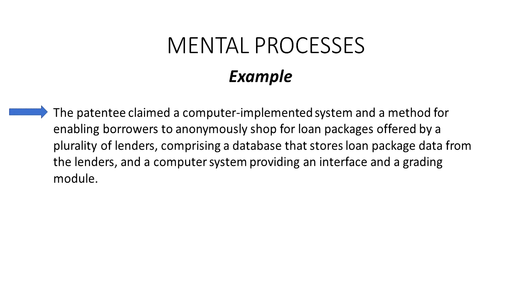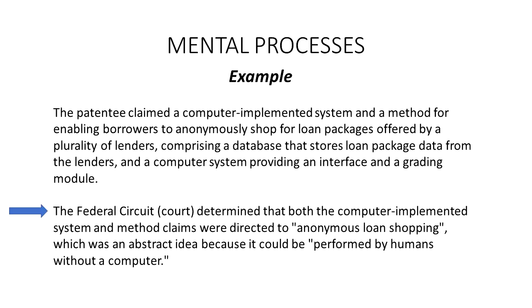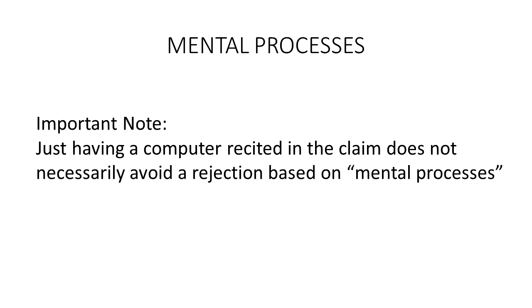Now let's look at a mental process example. In this case, the patentee claimed a computer-implemented system and method for enabling borrowers to anonymously shop for loan packages offered by a plurality of lenders, comprising a database that stores loan package data and a computer system providing an interface and a grading module. The Federal Circuit determined that both the system and method claims were directed to anonymous loan shopping — an abstract idea — because it could be performed by humans without a computer.